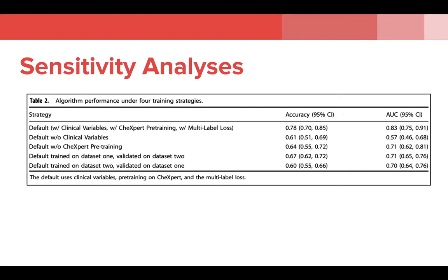When we look at the sensitivity analyses, models that did not include clinical variables and were trained only on chest x-ray images did not perform as well on the test set. The same goes for CheXpert pre-training: a model pre-trained on only ImageNet achieved a test set accuracy of 0.64 compared to 0.78 for the full model. Notably, models trained on one dataset and evaluated on the other also appear to suffer in terms of accuracy and AUC, although it's unclear how much of this is due to reduced sample size versus lack of generalizability across samples.